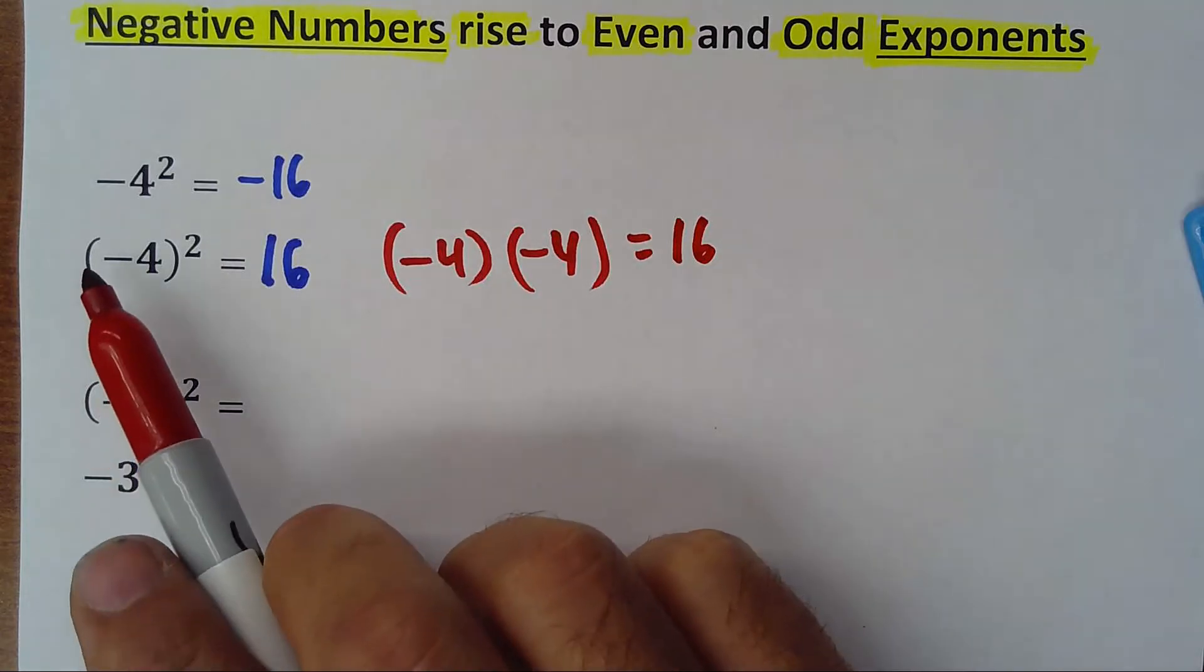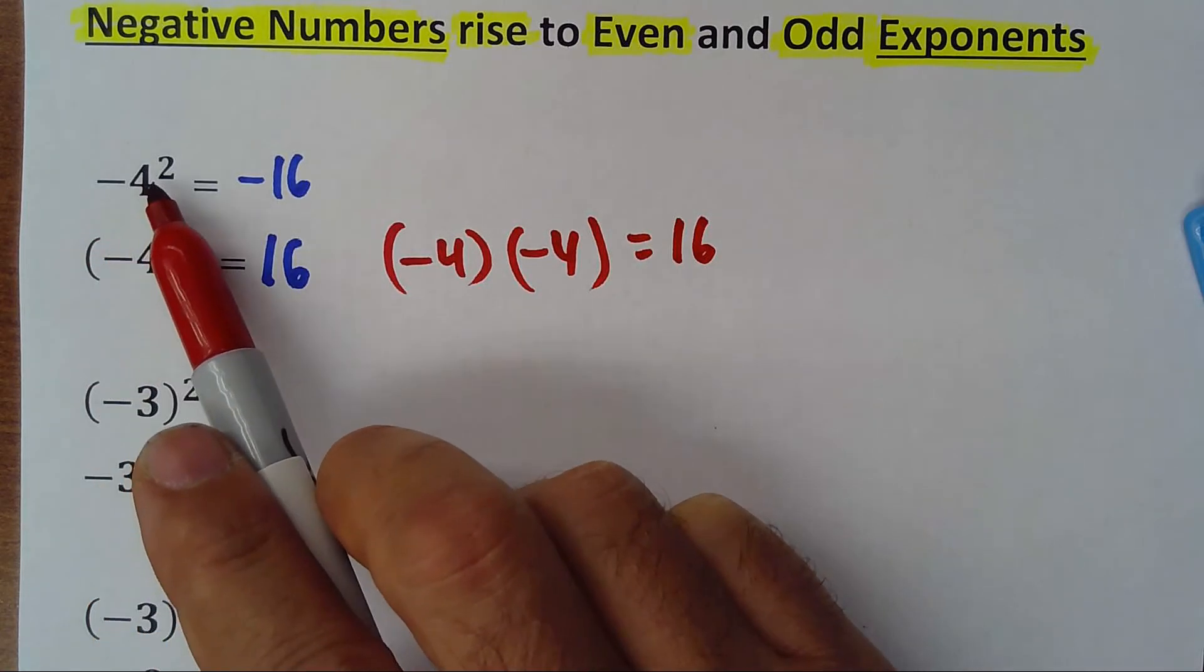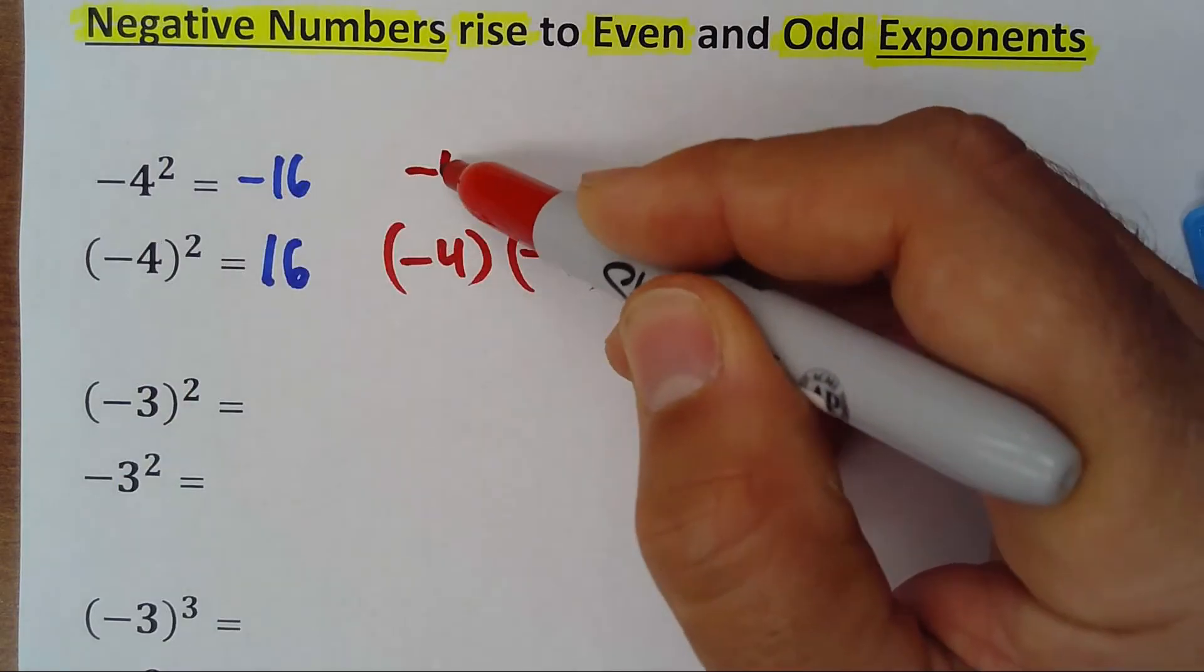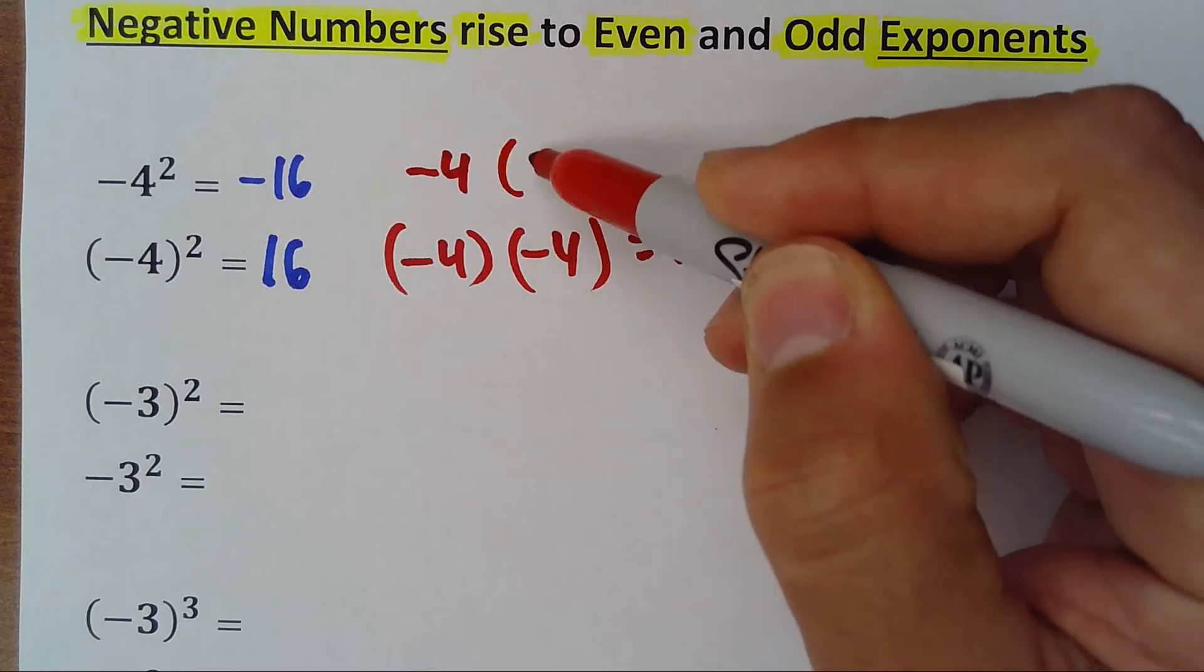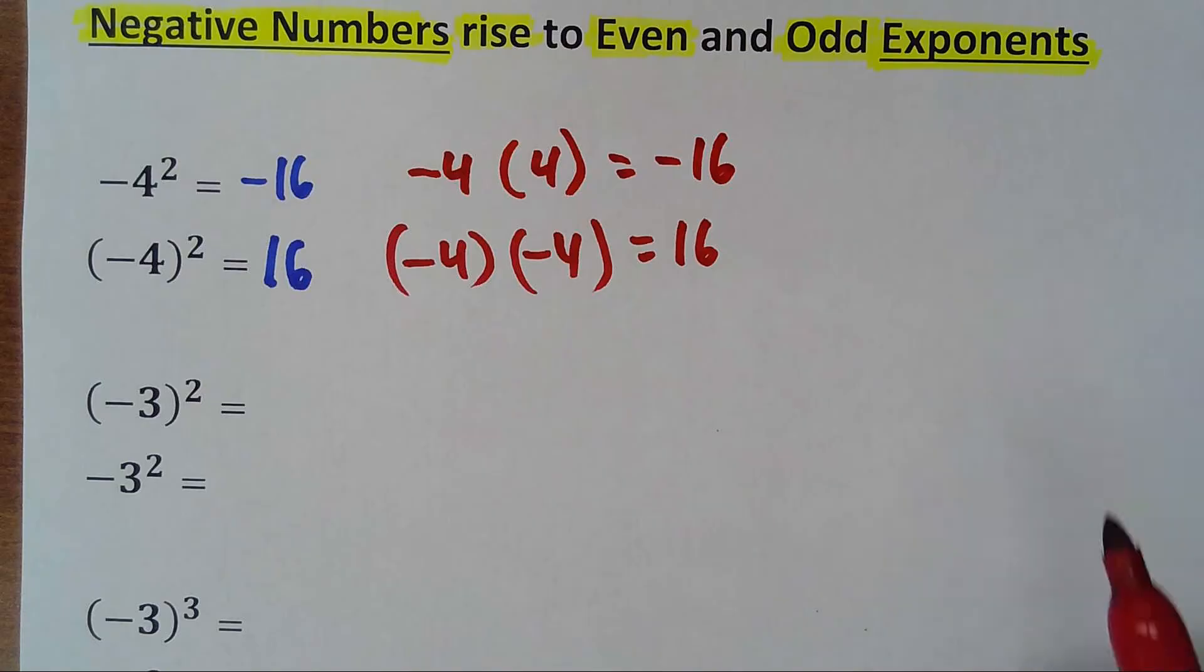But when you have the negative out of the parenthesis, the minus is not affected by the square. So, this one would be minus 4 times 4. And that is why it's equal negative 16.